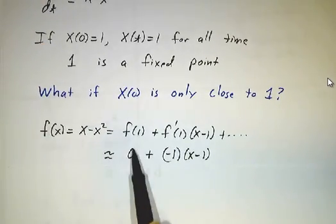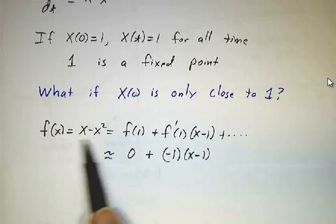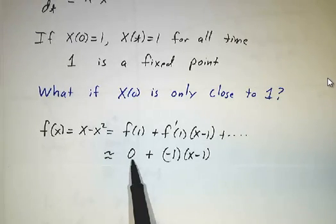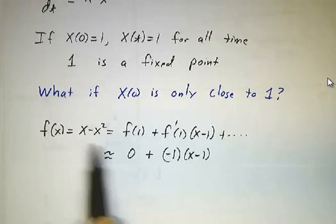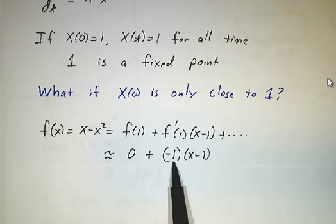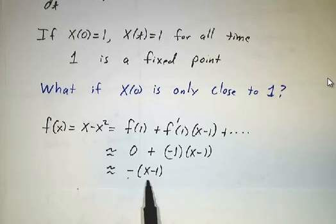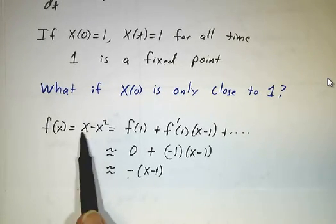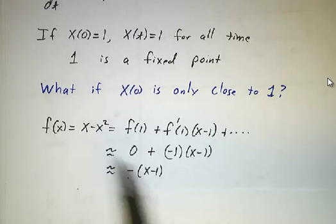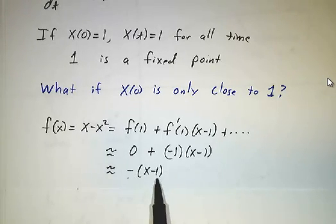In this case, f is 0. So f was x - x², f(1) is 0. And f'(1), well, let's see, 1 - 2x, that's -1. And so we get -(x - 1). So this function near x = 1 can be approximated as -(x - 1).